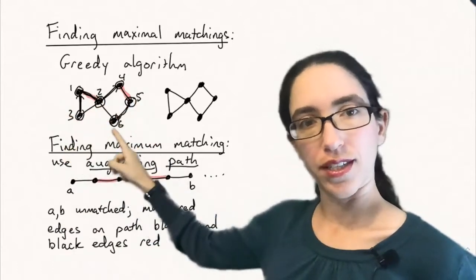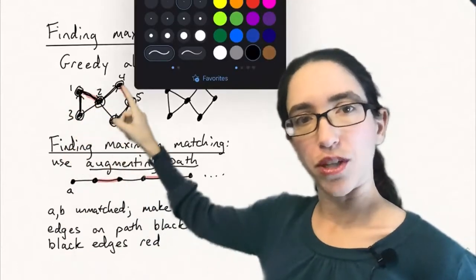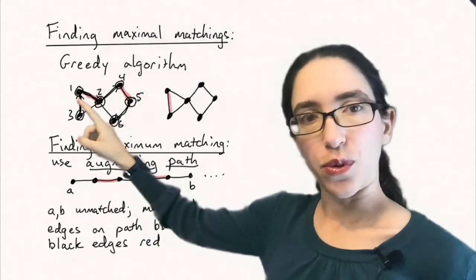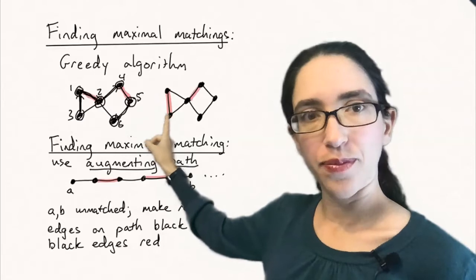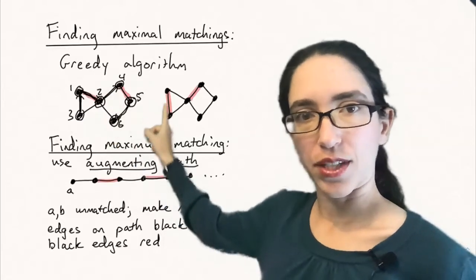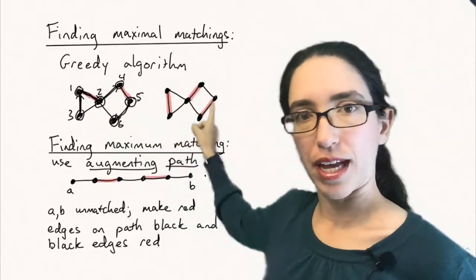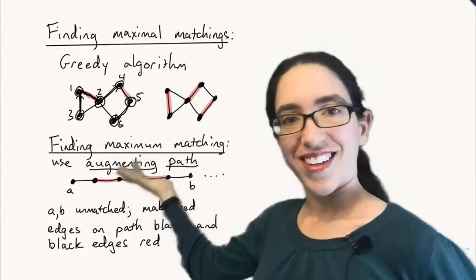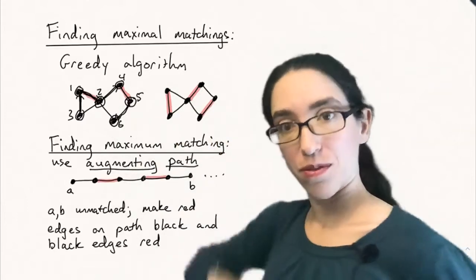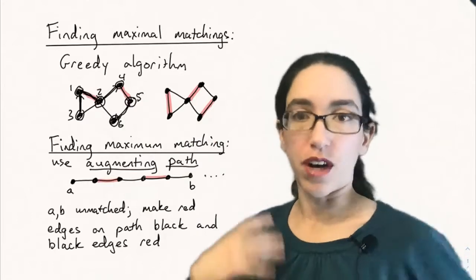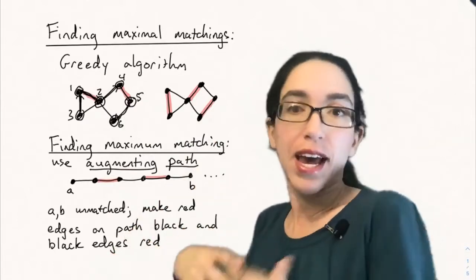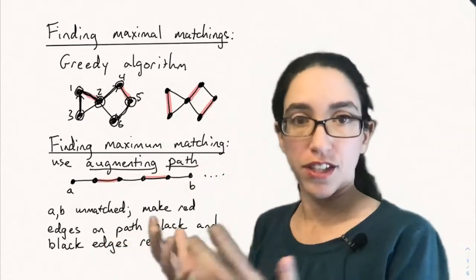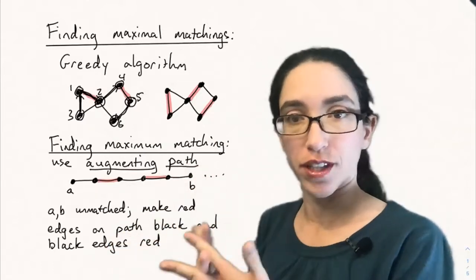Now we alternate which ones are black and which ones are red. So we change the black ones to red here on this side and the red ones to black. So now we have red, black, red, black, red instead. And voila, we've ended up with a matching of one larger size. So that's how augmenting paths can be used to take a maximal matching that isn't maximum and extend it by one edge to make it larger, to enlarge the matching.